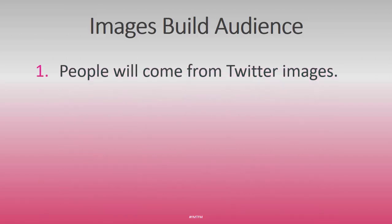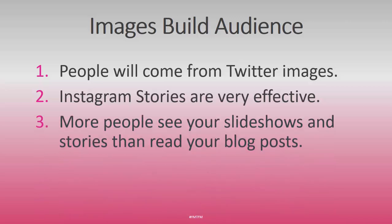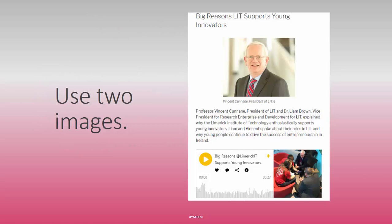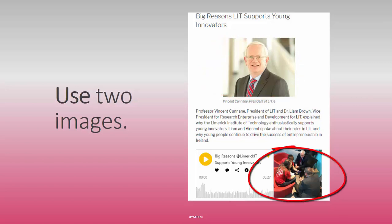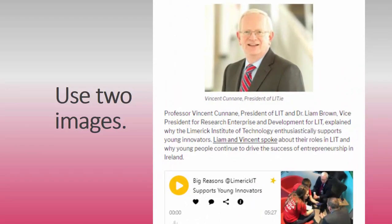You'll get greater listenership by having imagery attached to what you've written and spoken. Images build an audience — people will come from Twitter images that are remixed and shared. Instagram stories are perhaps the most effective way of pushing an image to a listener. Many people will see slideshows and stories — they'll see the images, they'll read the stories — not your blog posts. So it's important to have the imagery ready, remixed and syndicated, in addition to the blog post itself. Two images are critical to a blog post's success and are picked up and seen in different ways.